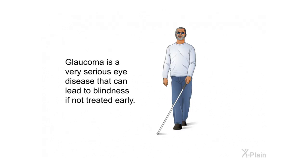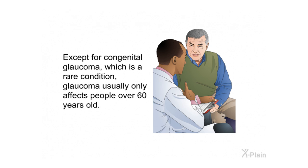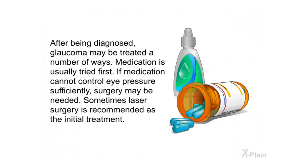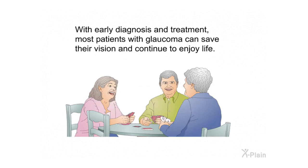Glaucoma is a very serious eye disease that can lead to blindness if not treated early. Except for congenital glaucoma, which is rare, glaucoma usually only affects people over 60 years old. The best way to diagnose glaucoma is to have frequent detailed eye exams — African Americans over the age of 40 and anyone else over 60 should have their eyes frequently examined. After diagnosis, glaucoma may be treated with medication first, and surgery if needed. With early diagnosis and treatment, most patients with glaucoma can save their vision and continue to enjoy life.